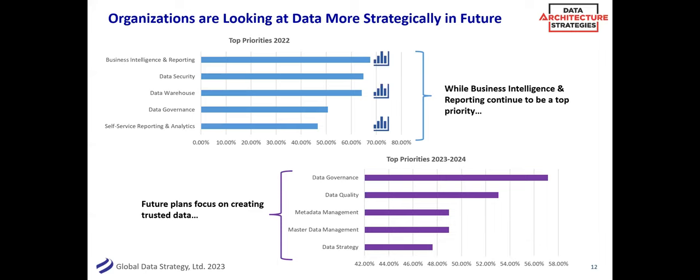What are your top priorities in terms of technology? In 2022, a lot of it is — no surprise — business intelligence, data warehousing, and self-service reporting and analytics. That good old-fashioned but never-going-away reporting and BI is why you're often looking at data. But when you look at what people are looking at in the future — the next two years — what I find interesting is it's governance, quality, metadata, master data, and a bit of strategy.